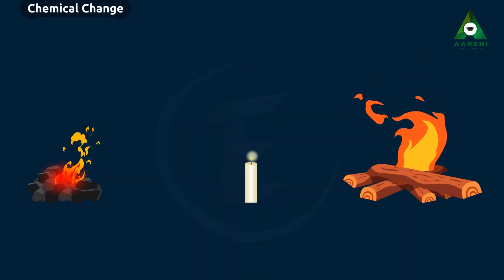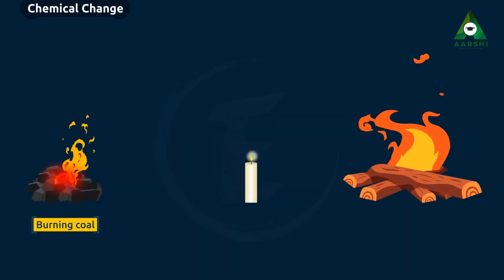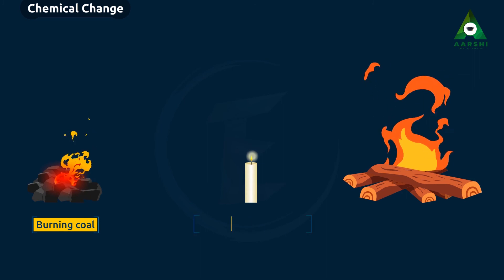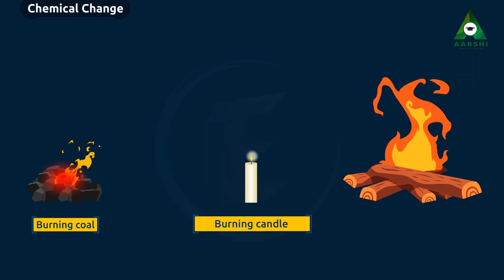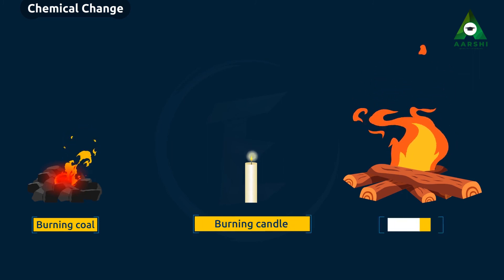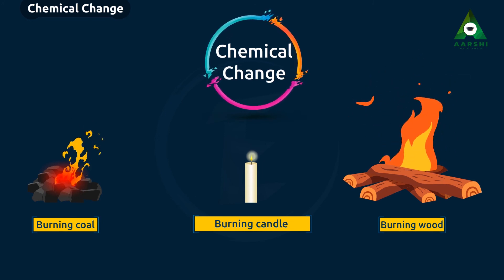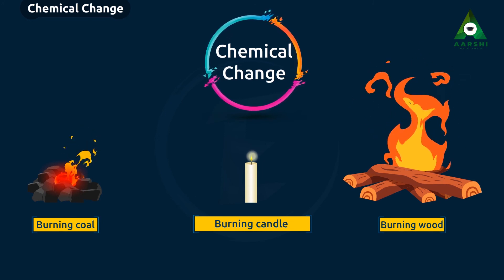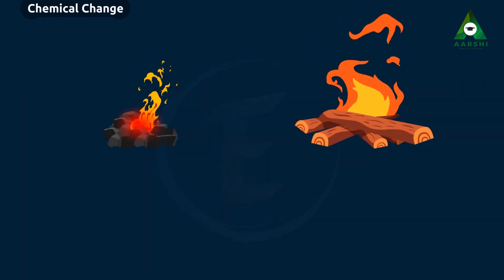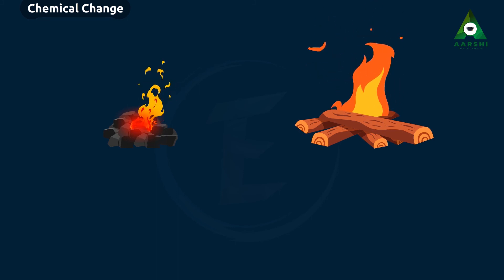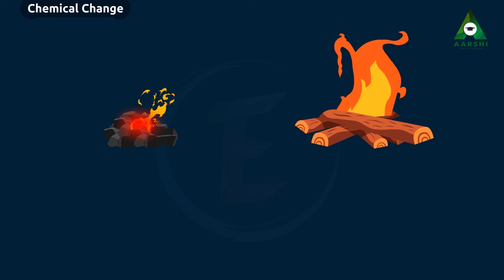Examples: burning of coal, burning of a candle. Burning of anything is a chemical change, as new substances are formed after burning and the chemical composition of the substance is changed.